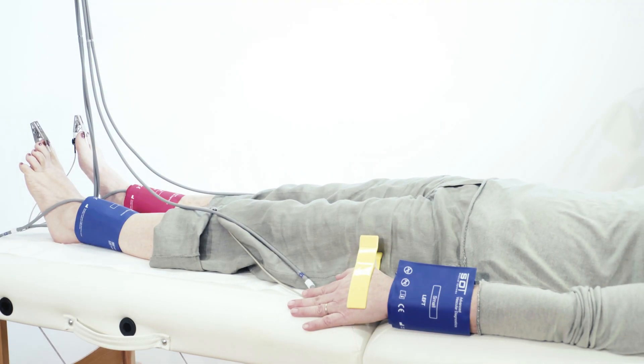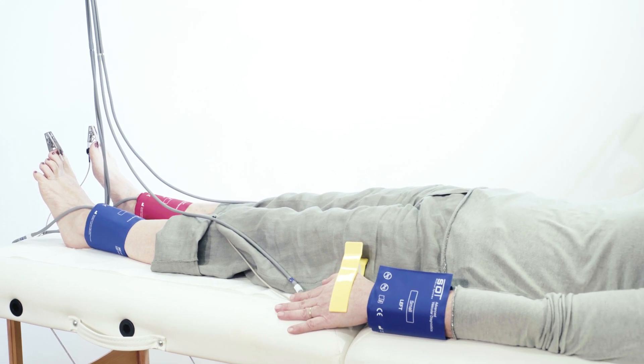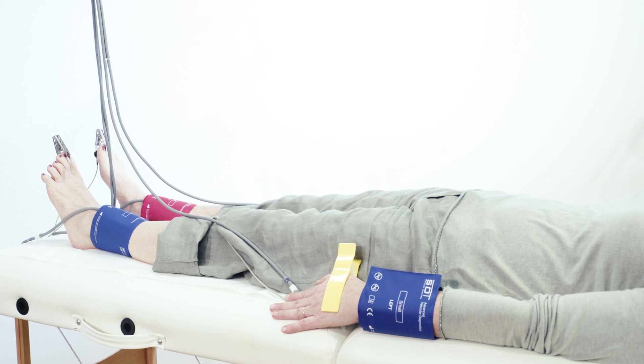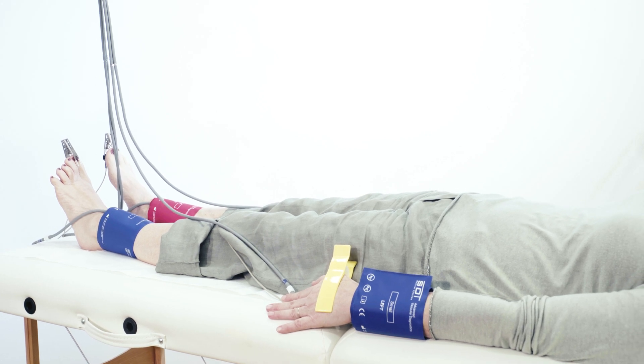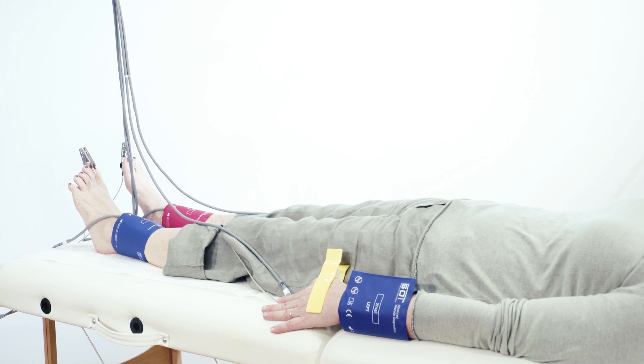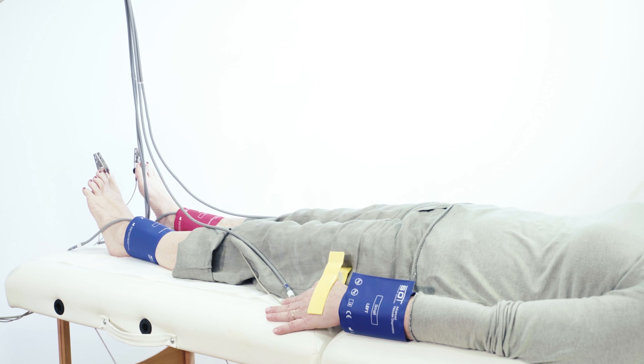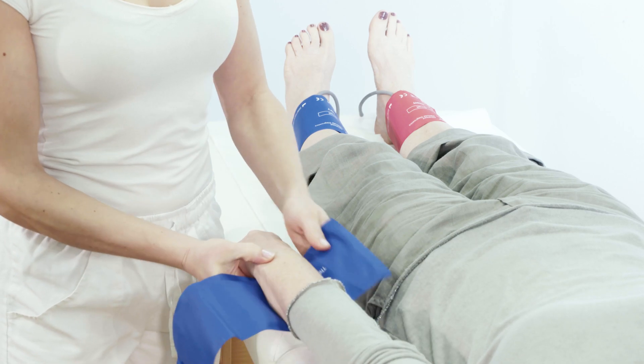The H-top method allows simultaneous measurement at up to six measuring points with four measuring cuffs and two optical sensors. This enables detection of circulatory disorders of the large vessels and determination of circulation in the forefoot and toe area.